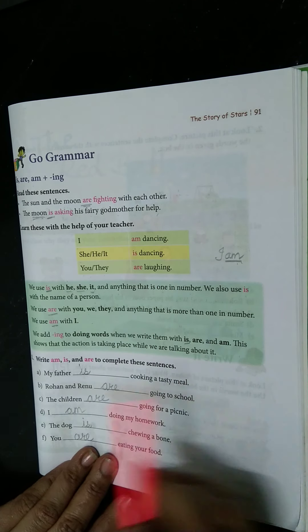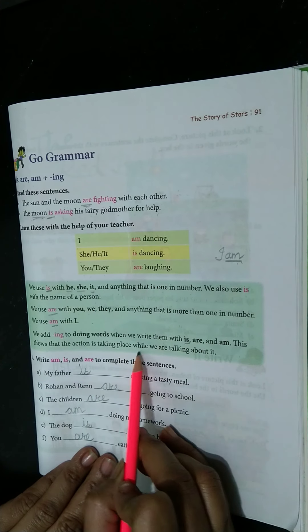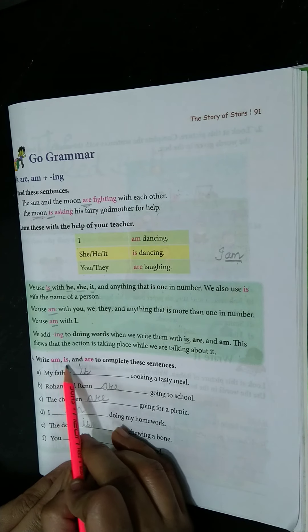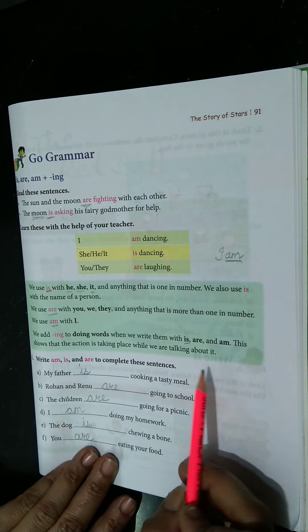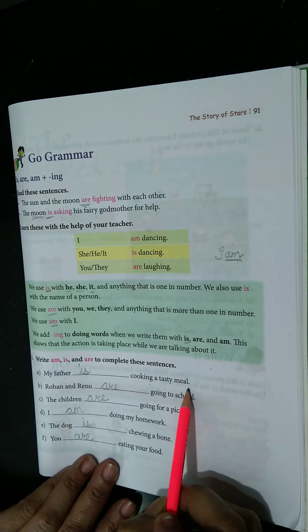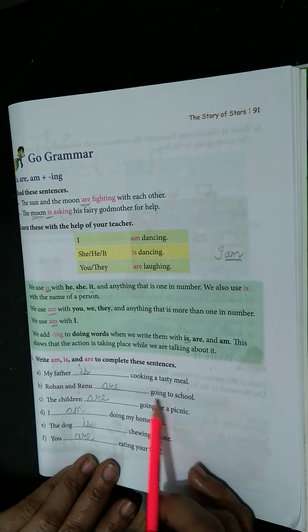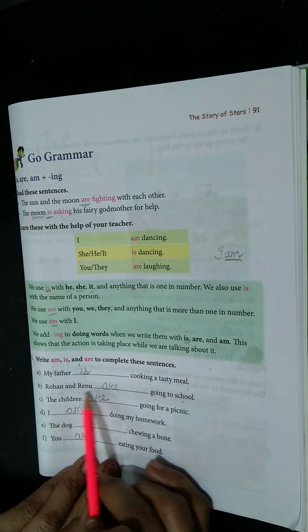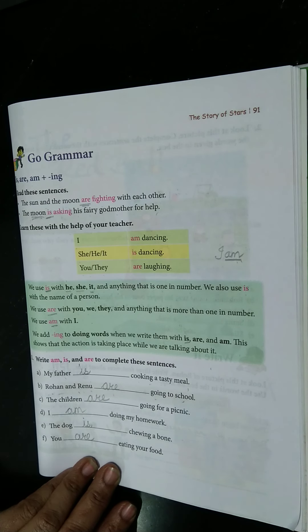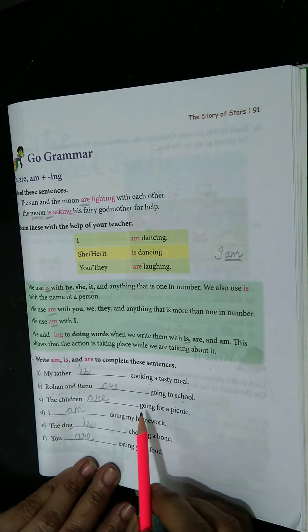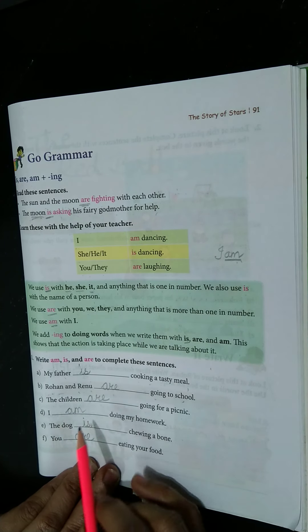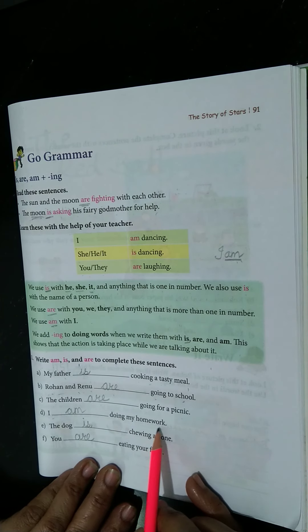We add ing to doing words when we write them with is, are, and am. We add ing to doing words. This shows that the action is taking place while we are talking about it. Write am, is, and are to complete the sentences. Now my father, one, my father is cooking tasty meal. Rohan and Renu are going to school, both, two, more than one. The children, many children, are going for a picnic. I, always we will write am, I am doing my homework.